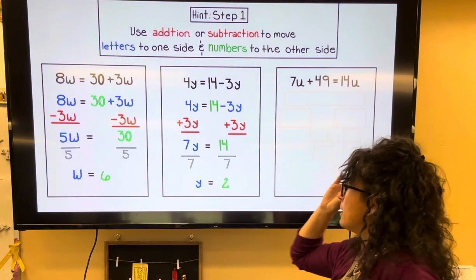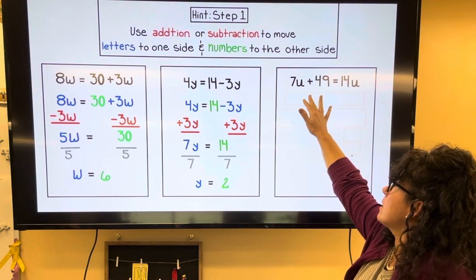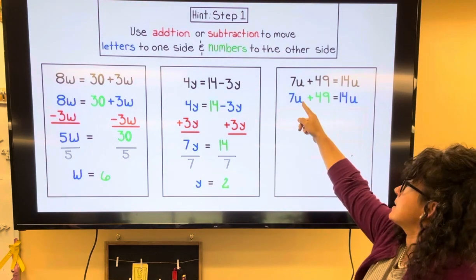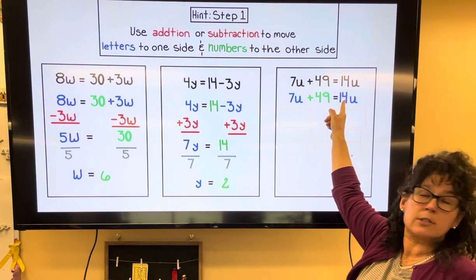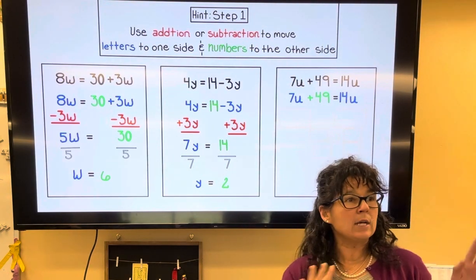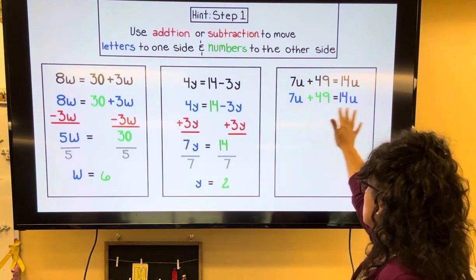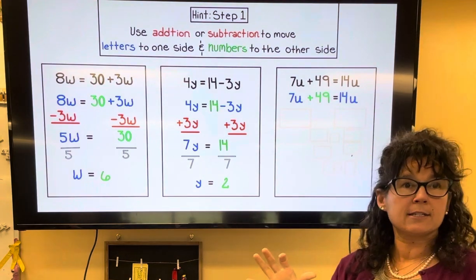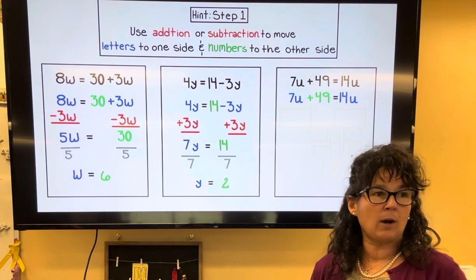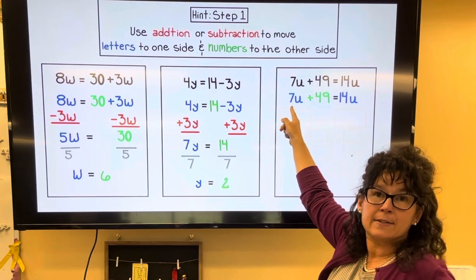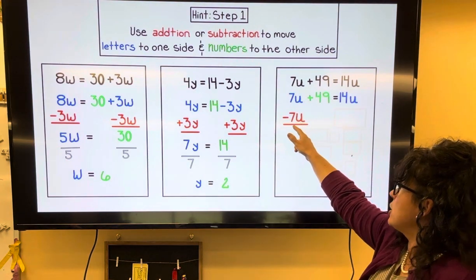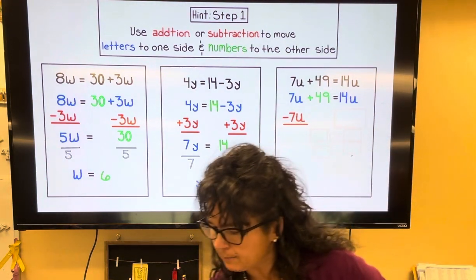Let's do one more example. The 7u and 14u are my letters; 49 is my number. If I want to move letters to one side and numbers to the other, the fastest way is to move the 7u to the right. It's a positive 7u, so to get rid of it I'm going to subtract 7u. What I do to one side of the equal sign, I do to the other.